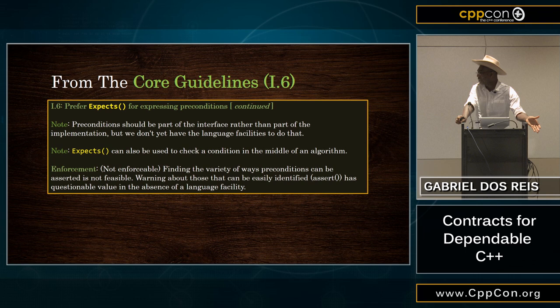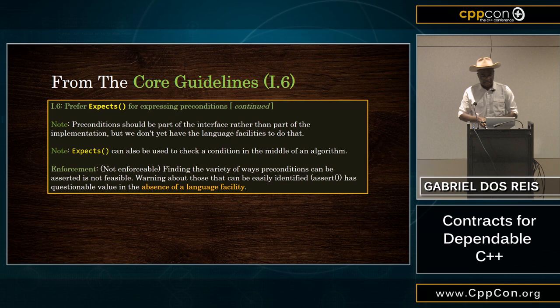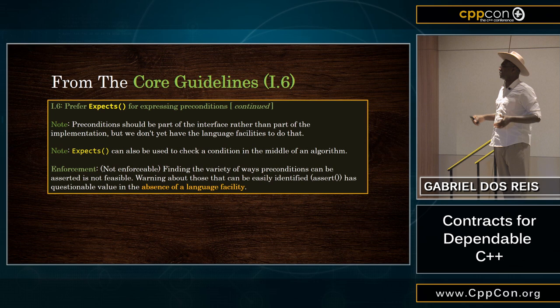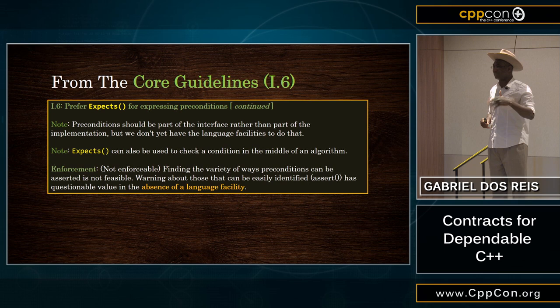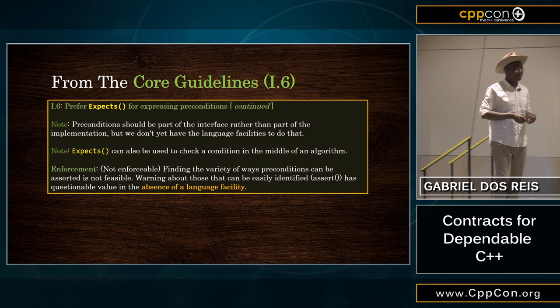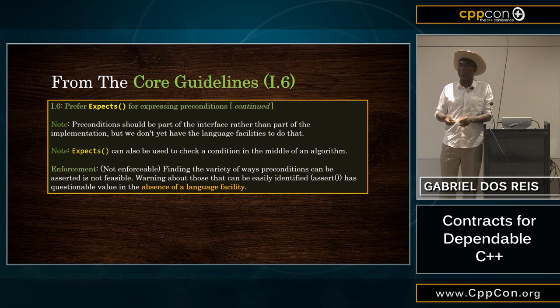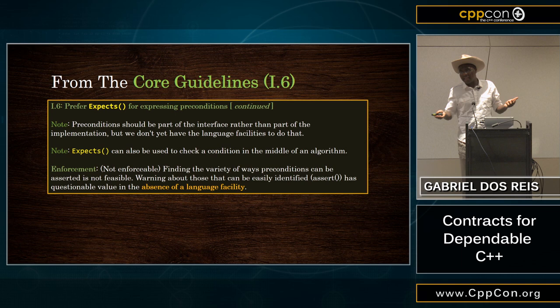One more thing about the expect macro. You could say: well, if we know that something is a precondition, shouldn't we just ask the compiler to go through the body of a function and warn us when we assert something that logically should be a precondition? That's a good idea on paper, but in practice it doesn't make a lot of sense. If you make a warning, what else happens? We don't have the language facility to actually take advantage of it — so it sounds interesting, but not in practice.